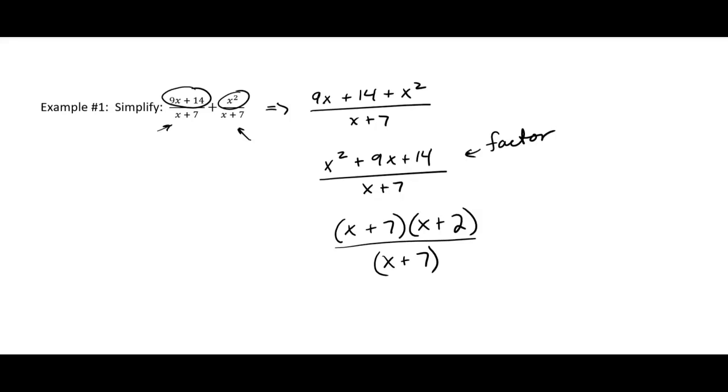That x plus 7 is the only factor in the denominator other than 1, and we do have a factor in the numerator that cancels with one in the denominator. Our final answer is going to be just x plus 2. Sometimes these will simplify, sometimes they won't, but we always have to try to simplify.